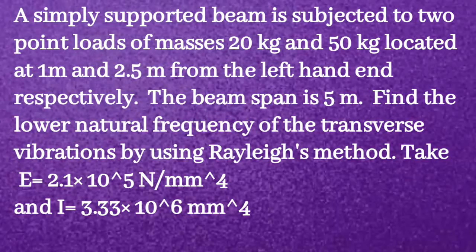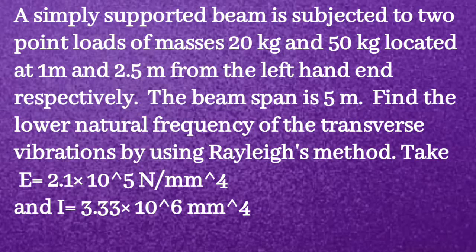Given question: A simply supported beam is subjected to two point loads of masses 20 kg and 50 kg located at 1 meter and 2.5 meter from the left-hand end respectively. The beam span is 5 meters. Find the lower natural frequency of transverse vibrations using Rayleigh's method. Take E equal to 2.1 into 10 raised to 5 N per mm squared and I equal to 3.33 into 10 raised to 6 mm raised to 4.